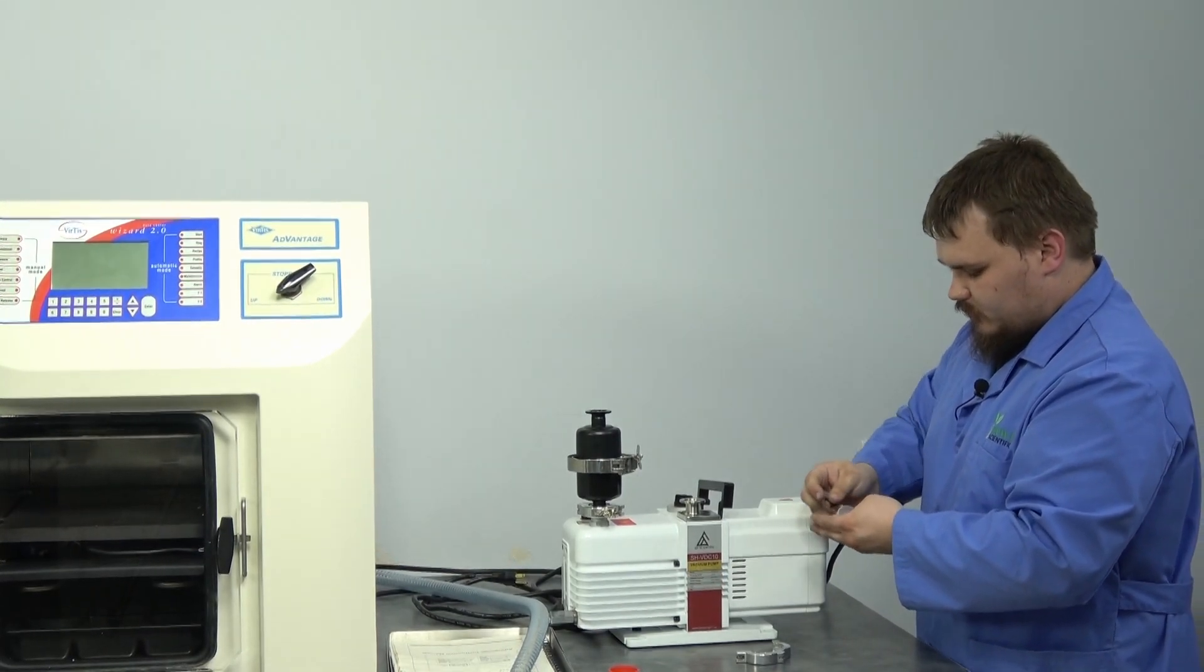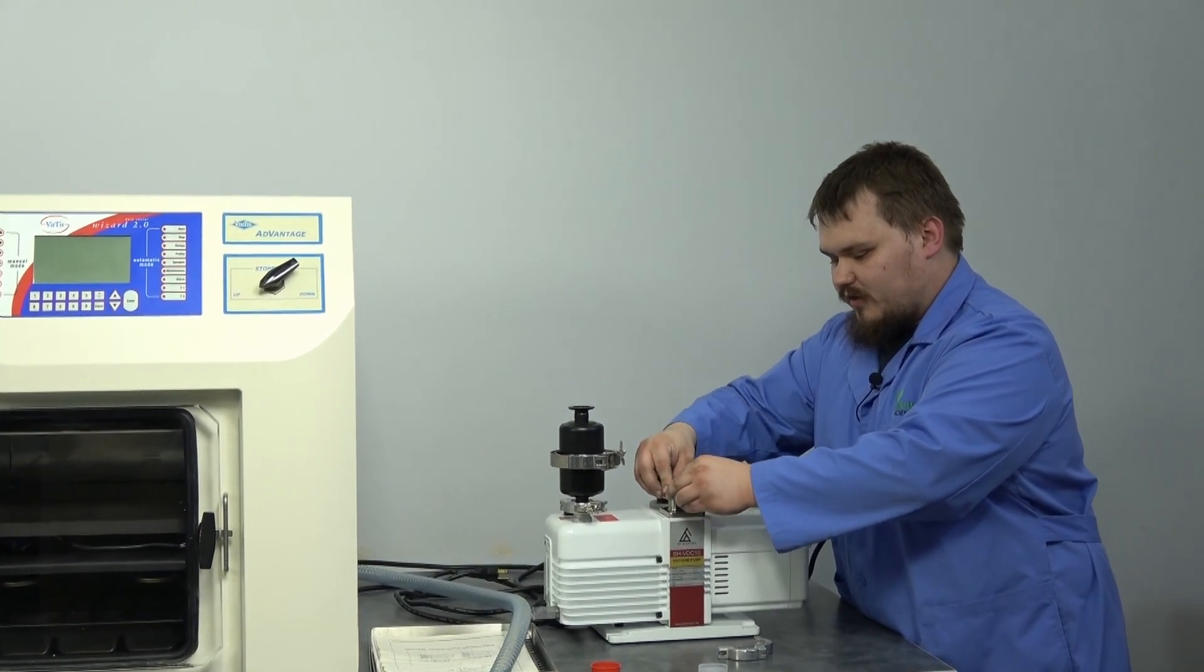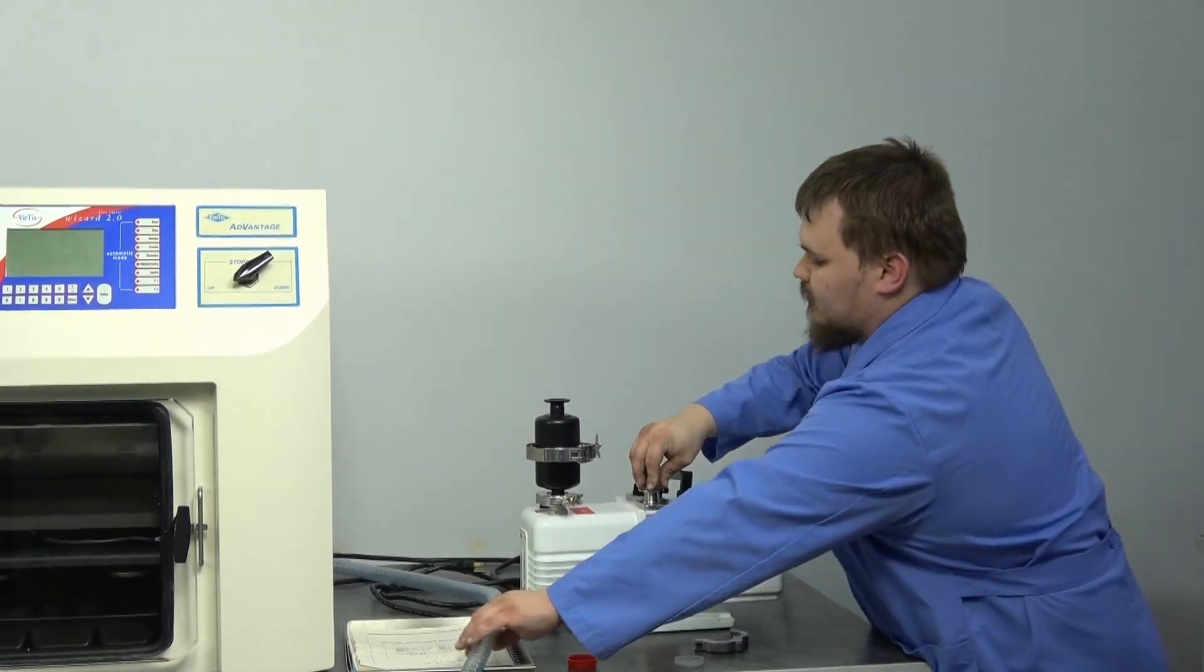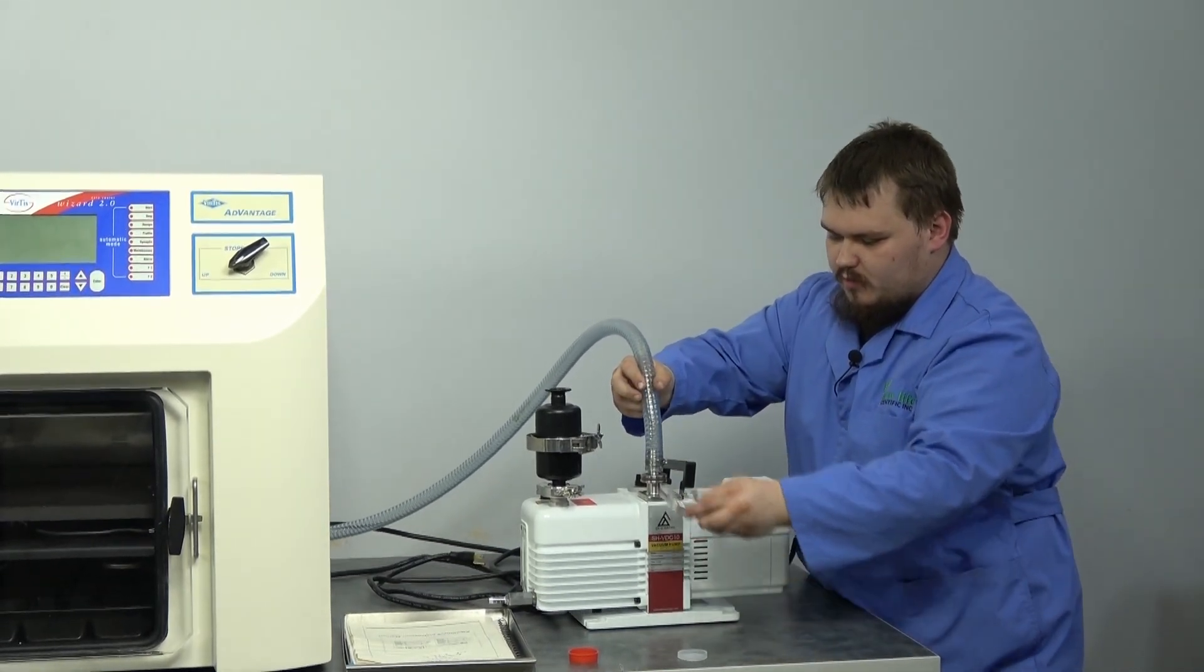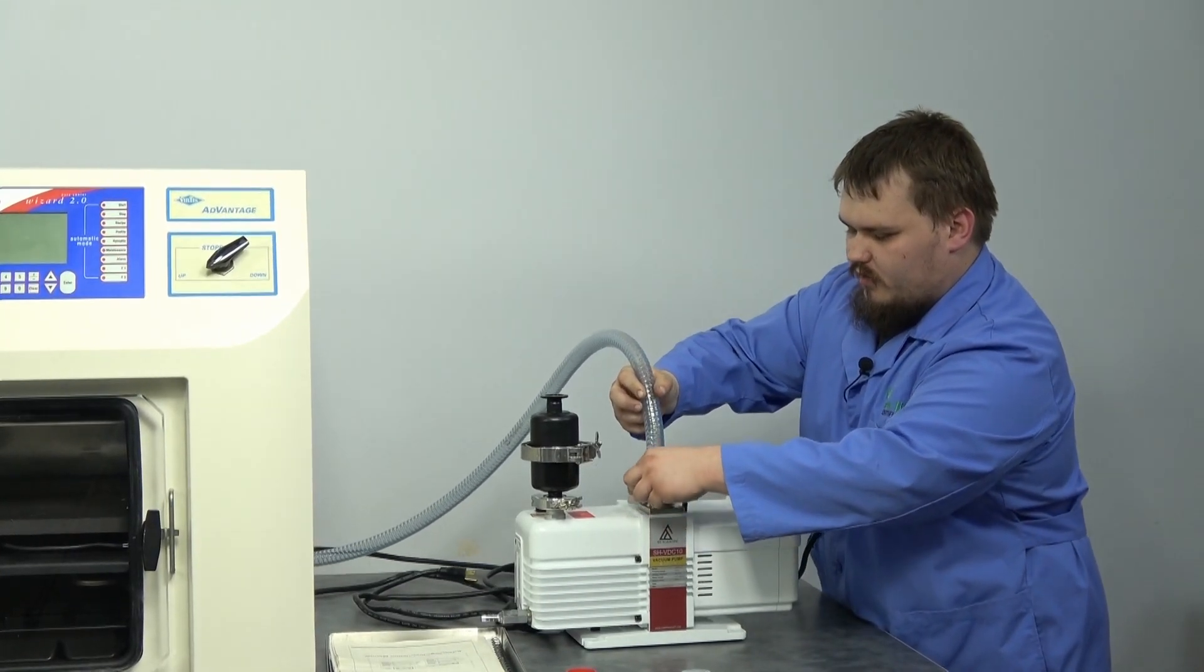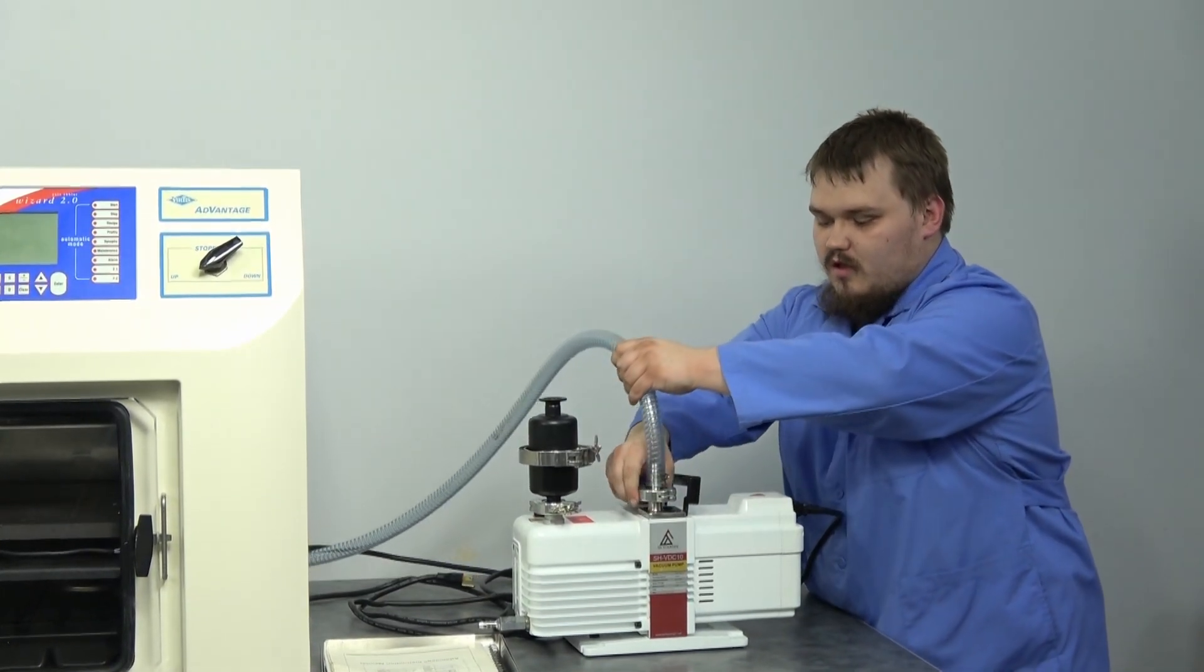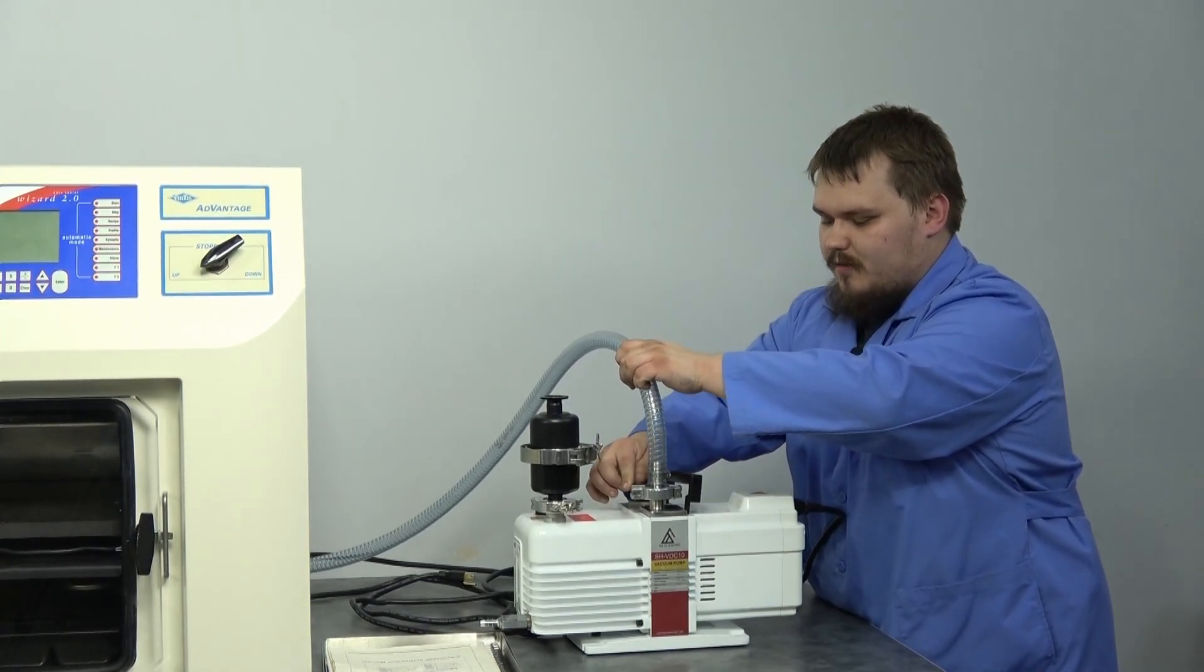Make sure to pull the seal out of the cap; it likes getting stuck in there. Place that seal right on top of the inlet of the vacuum pump. From there, put the hose down on top of it, put the connection on there for the clamp, and then tighten up the clamp.